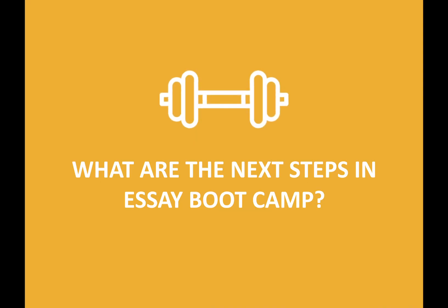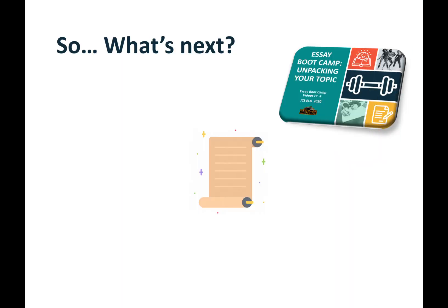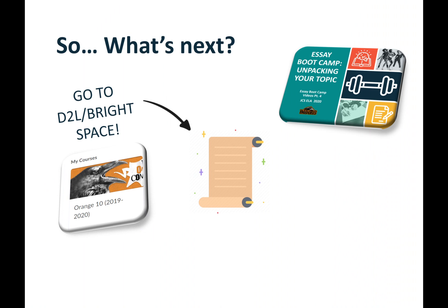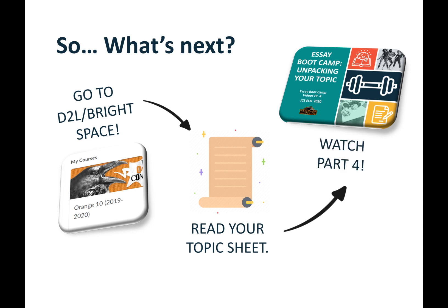Now onto the real learning — what are the next steps in our essay bootcamp? What we're trying to do next is apply what we understand about essay anatomy to the topic that we've been assigned to write an essay on. You're going to go to Brightspace or D2L, open your course, and find the topic sheet that your teacher assigned you. Then you're going to go to Part 4 of our video series and use that video to guide you through unpacking the topic on your topic sheet. Good luck!